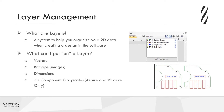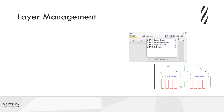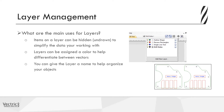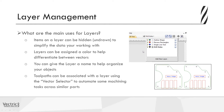That's for Aspire and V-Carve only. So what are the main uses for layers? They're designed to make our life a lot easier. Items on a layer can be hidden or shown to simplify the data in your project. Layers can be assigned a color to help identify which vectors belong to which layer. You can also give the layer a name to help organize your objects. Finally, toolpaths can be associated with a layer using the vector selector option to automate machining tasks across similar parts.